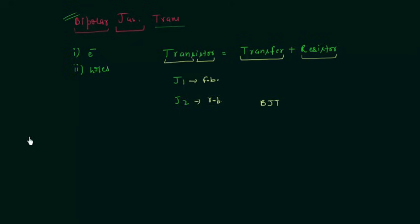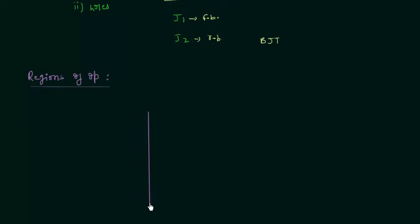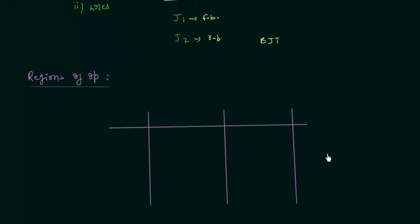The last topic in this lecture is regions of operation. As we have two junctions, there are four possible ways of biasing the transistor. In case of diodes, only two types of biasing existed — forward and reverse — because of one junction. But in transistors we have two junctions and thus four possible biasing combinations. The table has three columns: emitter-base junction (J1), collector-base junction (J2), and region of operation.